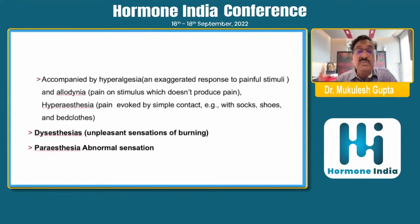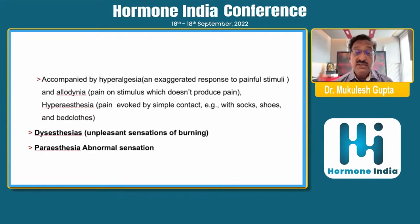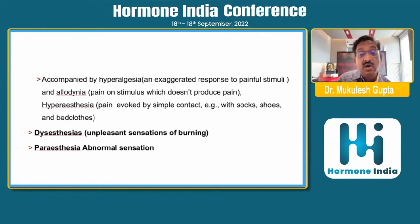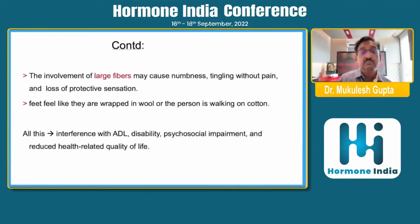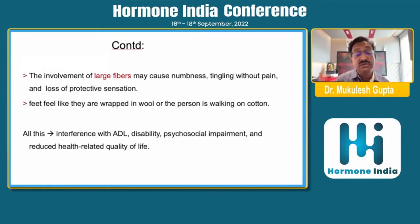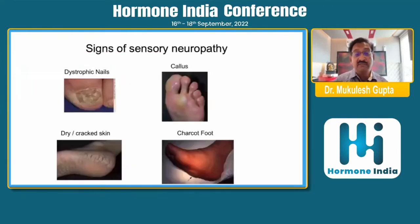Things we commonly note include hyperalgesia — the exaggerated response to painful stimuli — or allodynia, which is pain produced by a stimulus not normally capable of producing pain. If pain is evoked by simple contact, that is hyperesthesia. If the person has an unpleasant burning sensation, that is dysesthesia; abnormal sensation is paresthesia. Involvement of large fibers may cause numbness, tingling without pain, and loss of protective sensation. Feet may feel wrapped in wool, interfering with daily activities and overall quality of life.